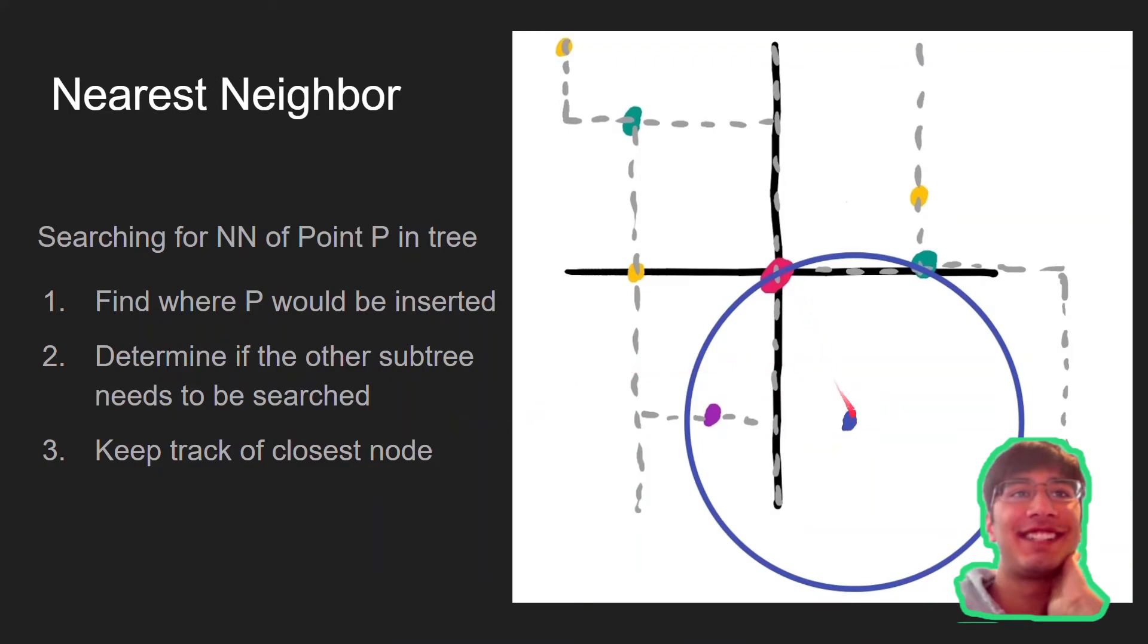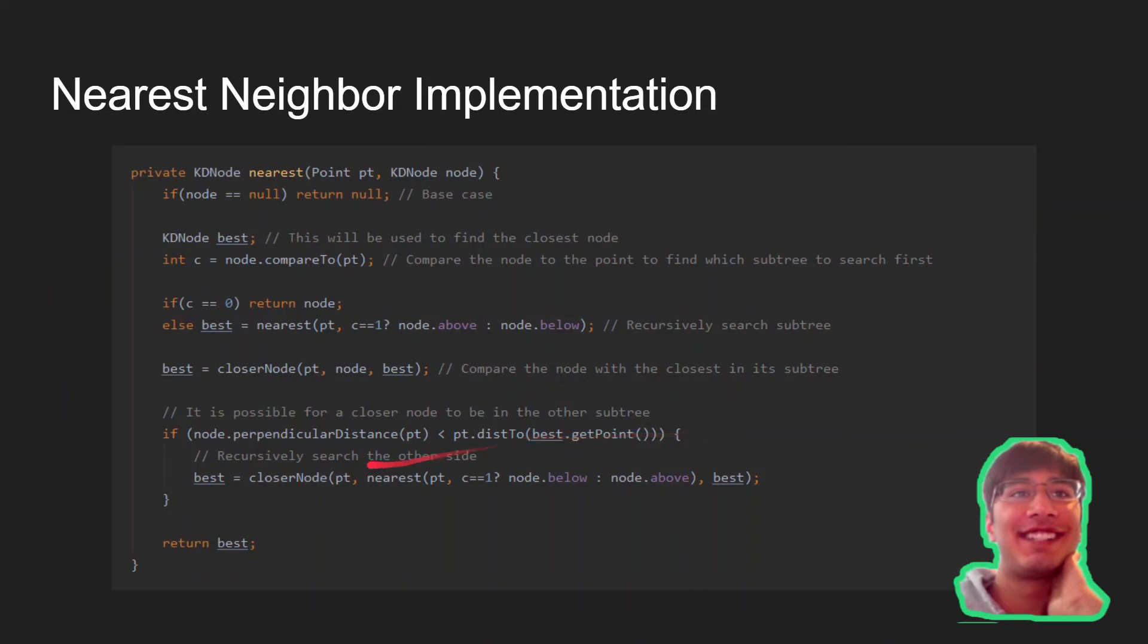As you can see here, currently we searched this subtree and the closest node was the root, but since the boundary distance, this distance from the point to the boundary, is smaller than the distance to the root, it's leaving this whole region for other points that can be closer to exist in the tree. So we must search this side, and if we find a node that is closer, we have to return that instead.